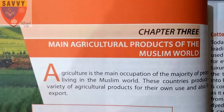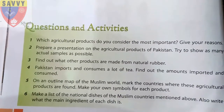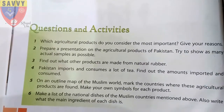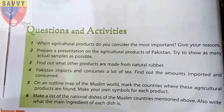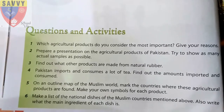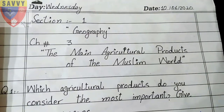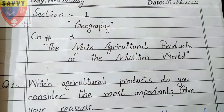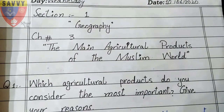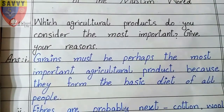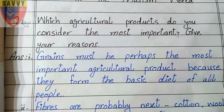Today we will solve the question answers. First question: which agricultural products do you consider the most important? Give your reasons. First, open your notebook, draw the date and margin, leave two-finger space, and write Section 1 — Geography, Chapter 3: The Main Agricultural Products of the Muslim World. Note down the question: which agricultural products do you consider the most important? Give your reasons.